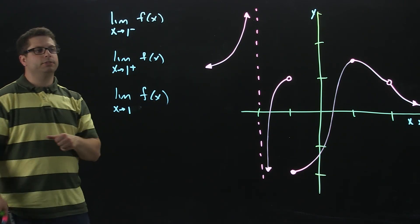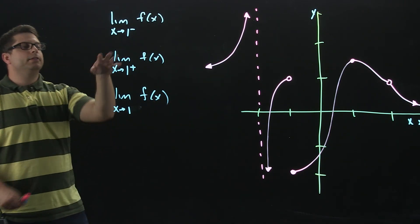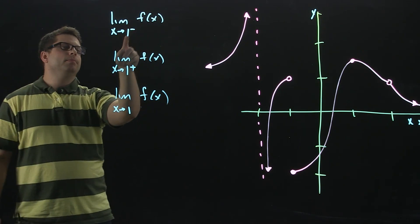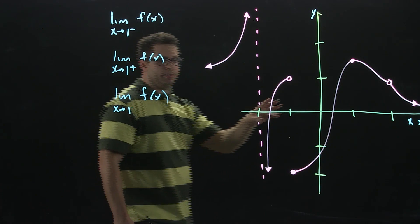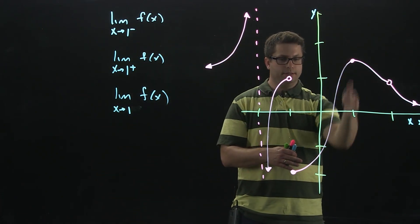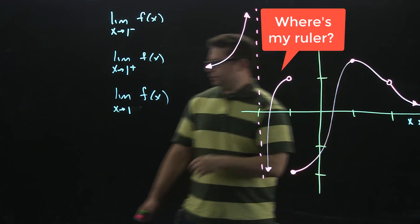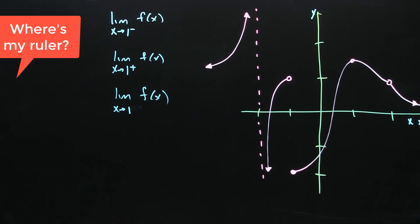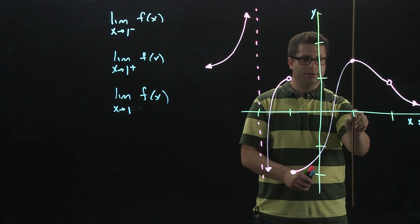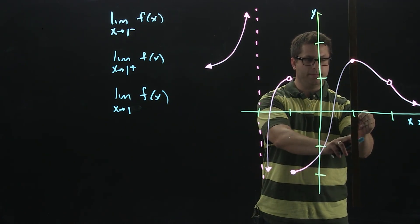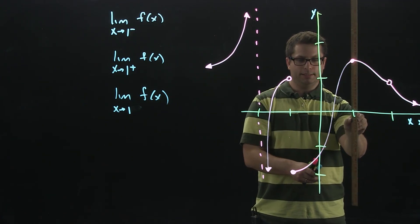Let's go ahead and start with these three. Here, these two are one-sided limits. What we're going to do is go to x equals 1, which is right here. Here's x equals 1 right here. I'm going to put the ruler right here, which you cannot see. There you go.